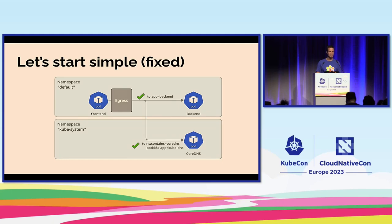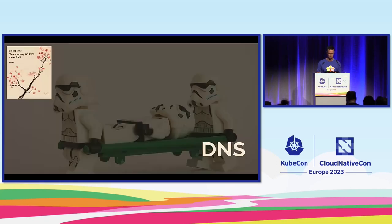So this is how the fixed policy looks: we not only need to allow to the backend, we also need to allow to the CoreDNS or KubeDNS pod. More DNS — because DNS is really often the problem. We looked at pod-to-pod communication.